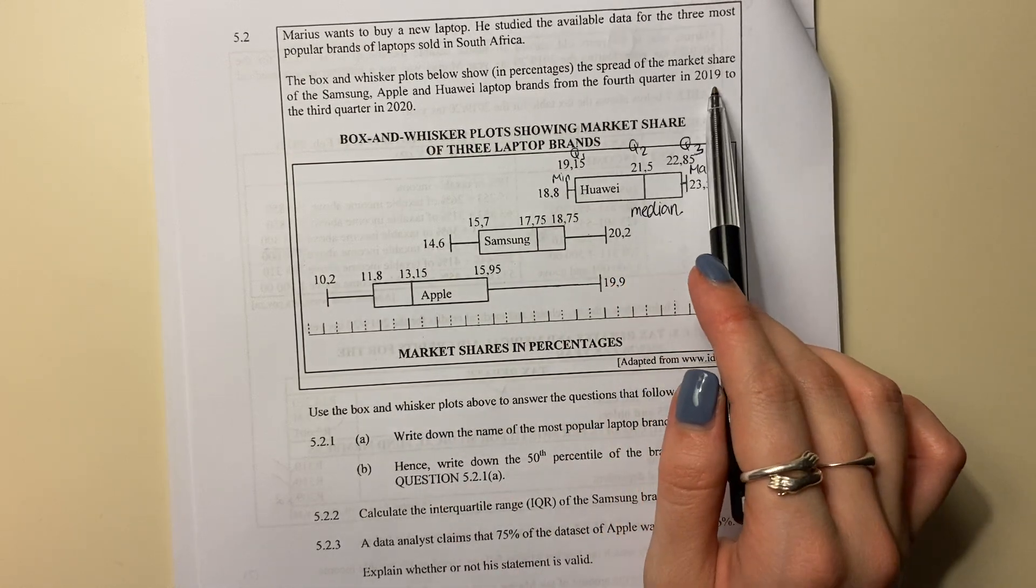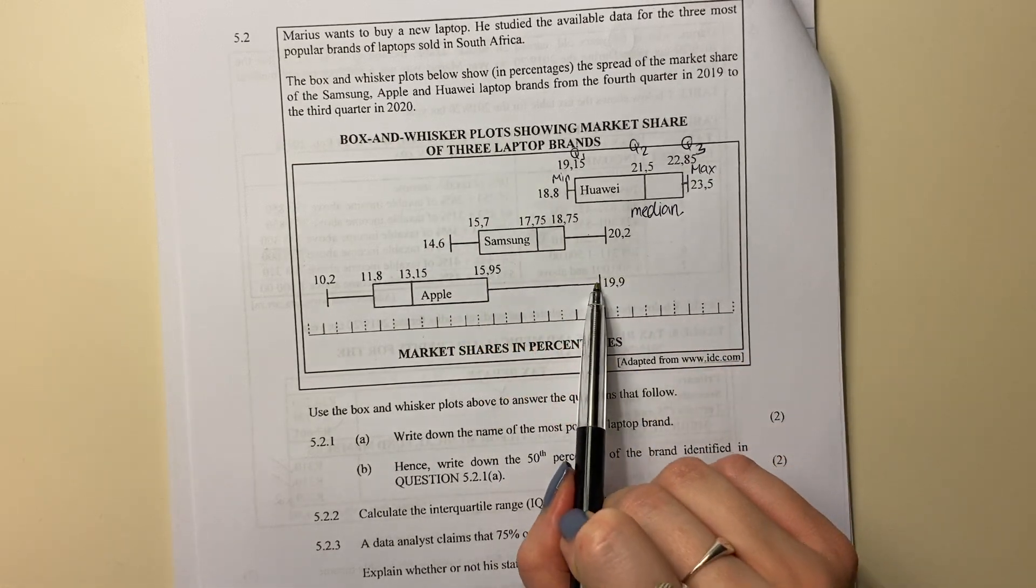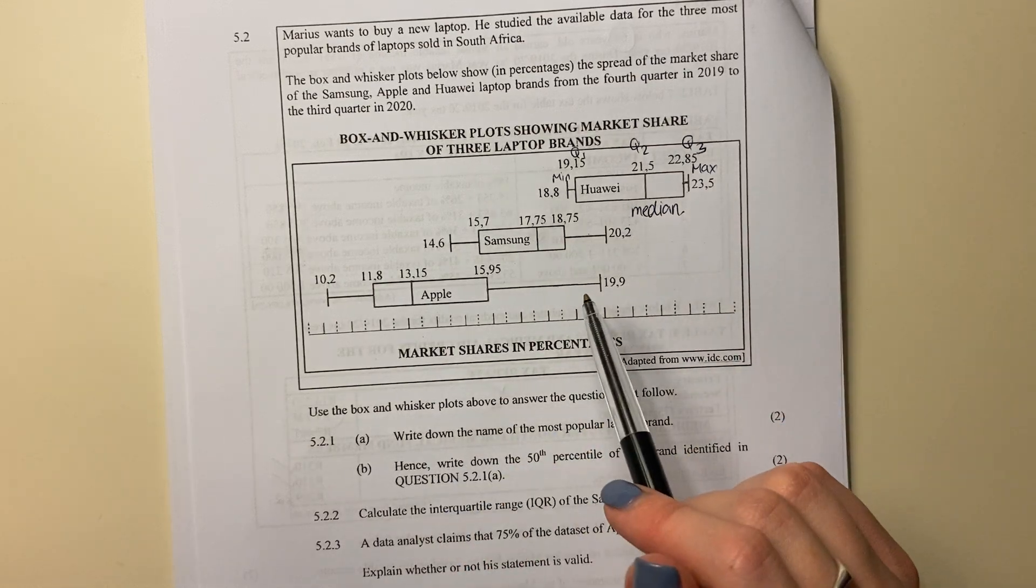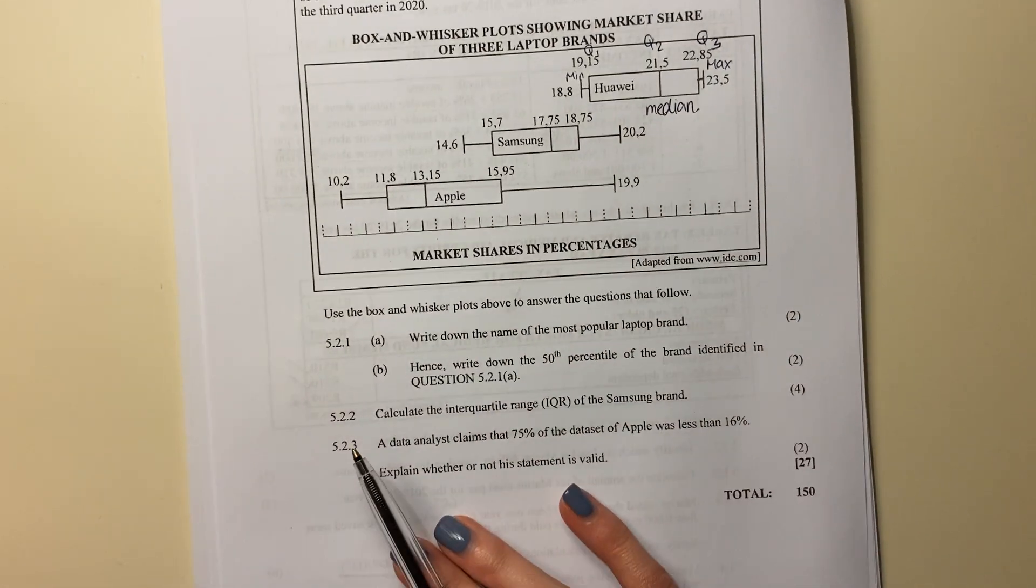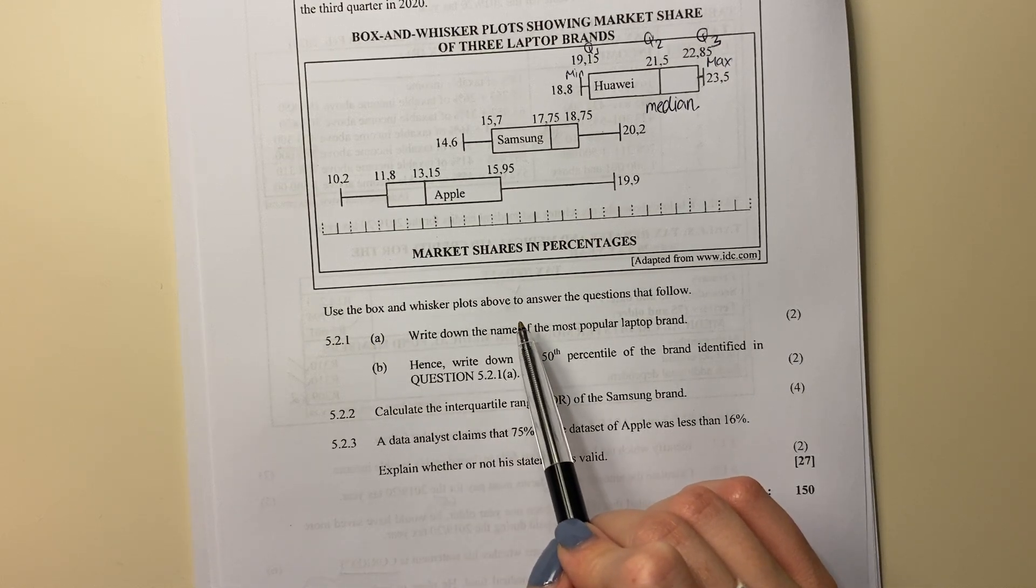So this is basically showing you the maximum and minimum over that period of time, from the fourth quarter in 2019 to the third quarter in 2020. This is where it was at its max, that's where it was at its min. We don't know when in time that was, but it's over that period of that interval. Then it says, use the box and whisker plots above to answer the questions that follow.